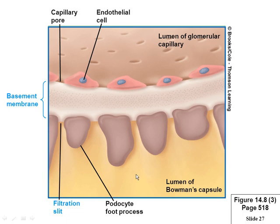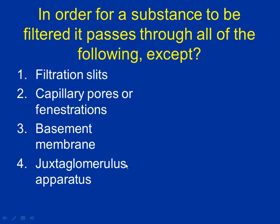In order for a substance to be filtered, it has to move through all of the following: filtration slits, capillary pores or fenestrations, and the basement membrane. It does NOT have to pass through the juxtaglomerular apparatus — that's just an area, not a filtration layer.